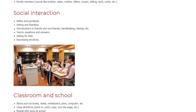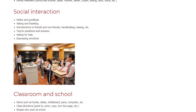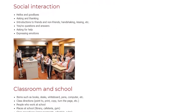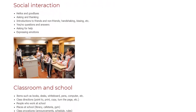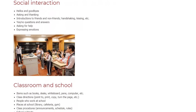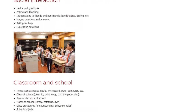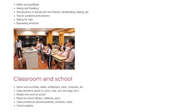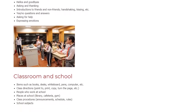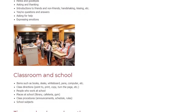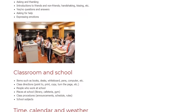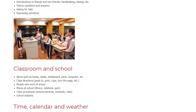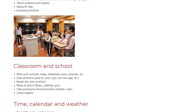Here is a short list of what a newcomer needs to know. Personal and Family Information: name, address, phone numbers, age, spelling of their first and last names, answering questions about grade, age, school, teacher, and where they are from. Family members: words like brother, sister, mother, father, cousin, sibling, aunt, uncle, etc.